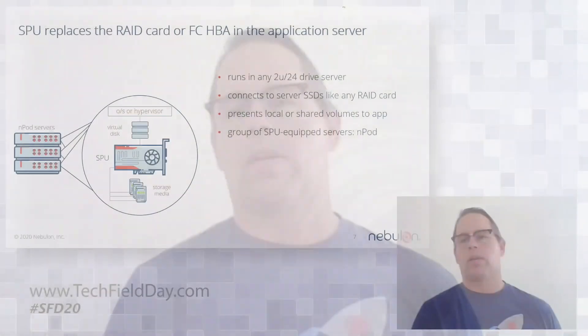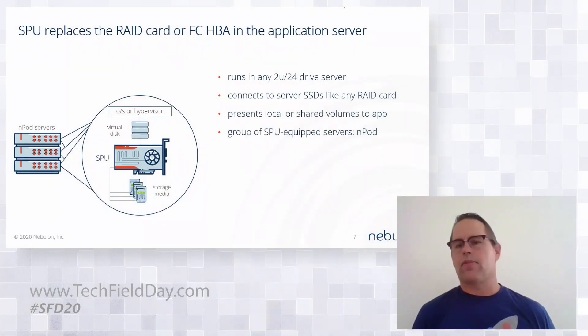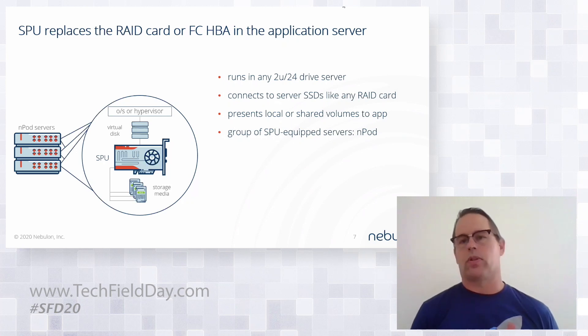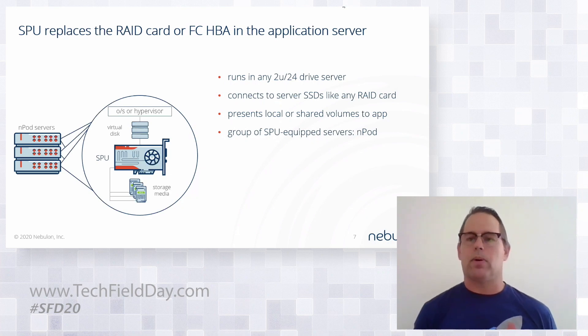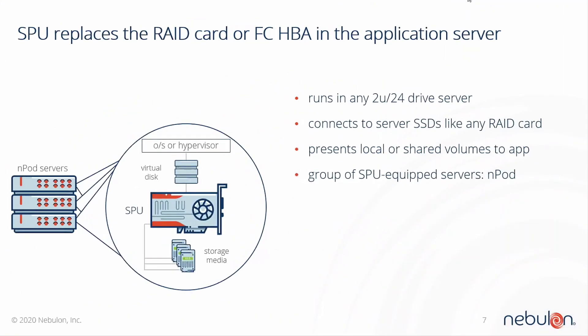Since I'm the hardware guy, I'm going to talk about the data plane. Let's go through the buying motion for enterprise-class servers. Your customer goes to his favorite OEM and buys his favorite 2U 24-drive industry-standard server. When he configures the server, it typically has either a RAID card for local storage or a fiber channel card that connects to the SAN. With cloud-defined storage, this buying motion remains exactly the same — he goes to his OEM, buys his server, but instead of a RAID card or fiber channel card, he has it configured with a Services Processing Unit from Nebulon, or SPU for short.